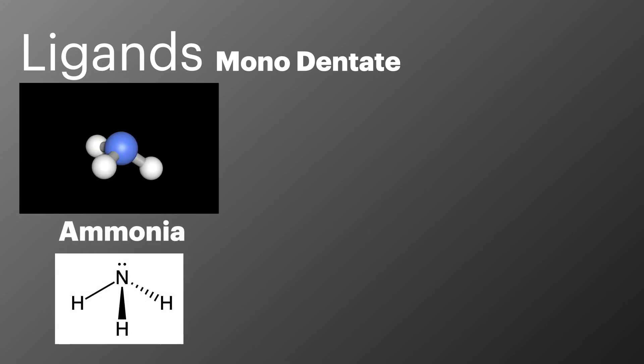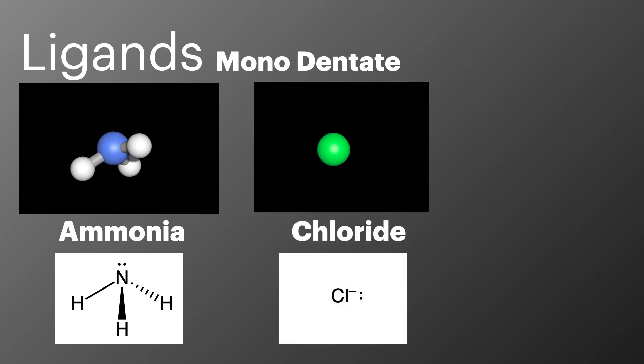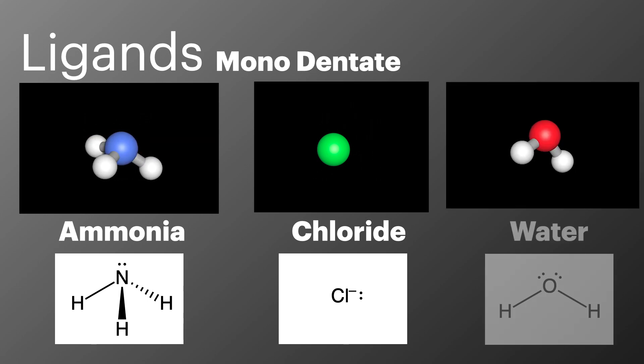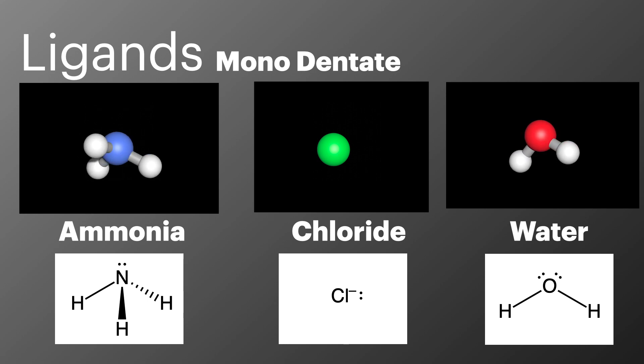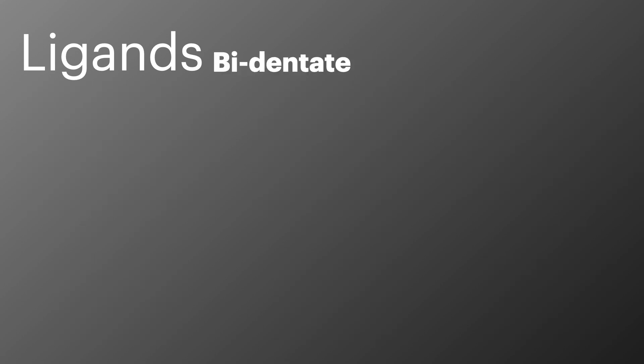When learning about ligands, there are three categories we need to know, classified by their dentate — the number of coordinate bonds they form. 'Dentate' is an old word meaning something like 'bite', so the ligand is biting into the metal ion. The first category is monodentate: these ligands form one coordinate bond. Ammonia has one lone pair and forms one coordinate bond. Chloride ions also have one lone pair and form one coordinate bond. Water has two lone pairs but still only forms one coordinate bond to the metal ion.